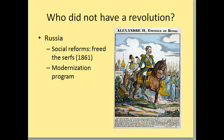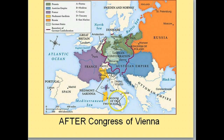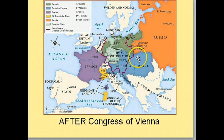Next we're going to look at the unification of Germany and Italy. If you think back to this map, you notice how Italy is made up of many different states, and Germany is made up of many different states within this confederation, and they're going to unite. We'll look at that in the next set of notes.